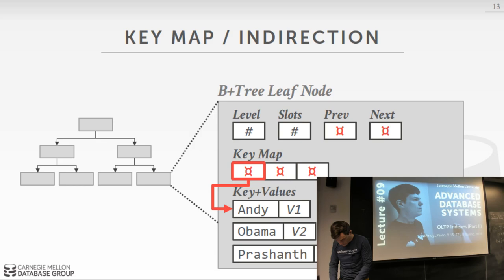If you want to look up 'Andy', you can do a binary search on the key map. You'd land on 'Obama' — Andy is less than Obama, so you know to go to the lower entry. With a prefix stored in the key map, you can compare just 'A' vs 'O' and immediately know the direction, reducing the number of indirection jumps. This is all going to be in CPU cache since it's a single contiguous byte array within a page.